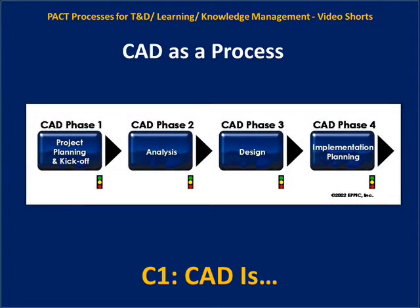The processes of CAD include four phases of a typical project: phase one, project planning and kickoff; phase two, analysis; phase three, design; and phase four, implementation planning.